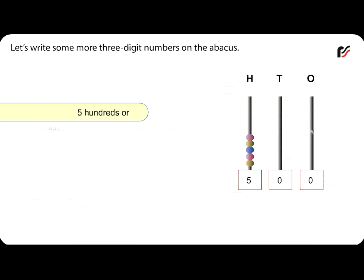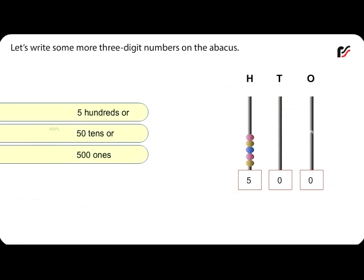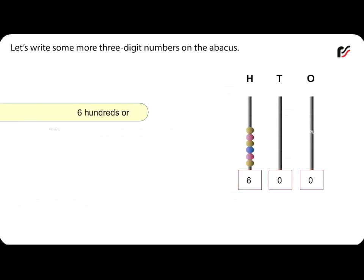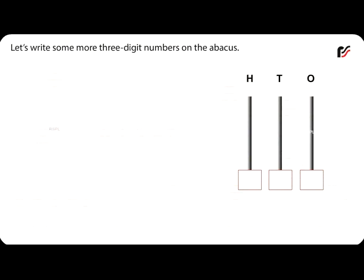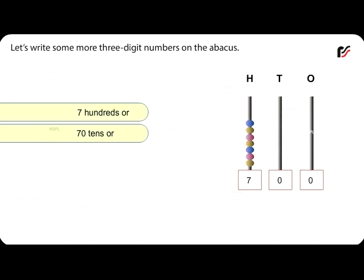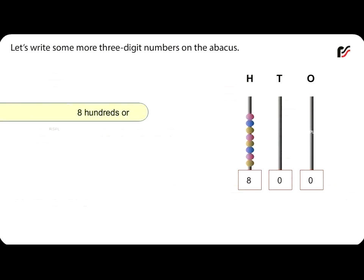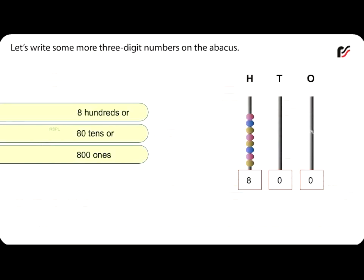Five hundreds, or fifty tens, or five hundred ones. Six hundreds, or sixty tens, or six hundred ones. Seven hundreds, or seventy tens, or seven hundred ones. Eight hundreds, or eighty tens, or eight hundred ones.